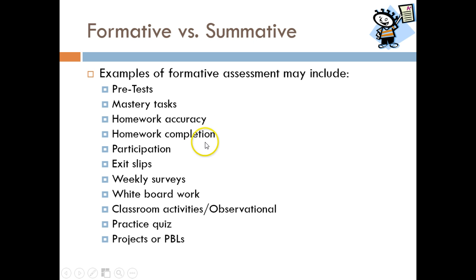Homework completion is not a valid assessment. A student could have every problem wrong and understand nothing, or skip all homework and understand everything. So completion measures effort, not content mastery. Similarly, homework accuracy reflects self-regulation strategies more than mastery. Neither homework accuracy nor completion demonstrates content mastery, so neither should be summative or included in a student's grade.